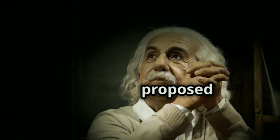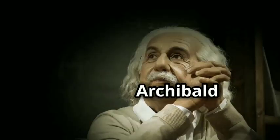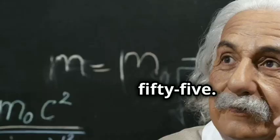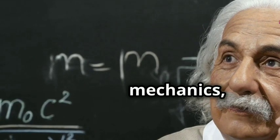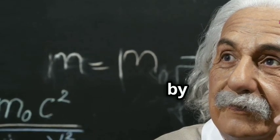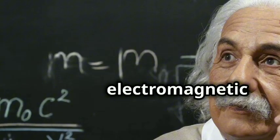The concept of the geon was first proposed by physicist John Archibald Wheeler in 1955. Wheeler, a pioneering figure in general relativity and quantum mechanics, coined the term geon by combining gravitational electromagnetic entity.